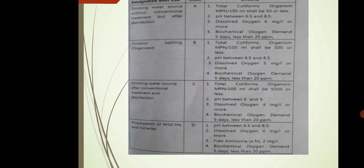When the Class C criteria are satisfied, the water can be used for drinking after conventional treatment, outdoor purposes, or any other conventional use. For Class D — propagation of wildlife and fisheries — the criteria are: pH between 6.5 and 8.5, dissolved oxygen 4 mg per liter or more, free ammonia 2 mg per liter, and BOD after 5 days must be 20 ppm.